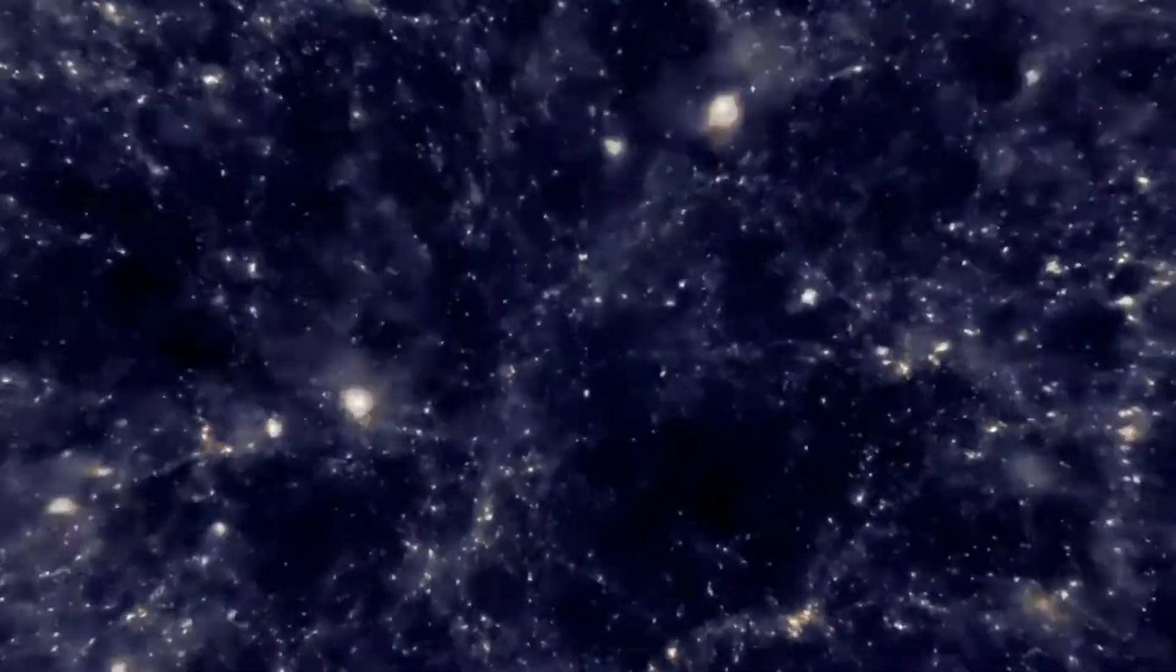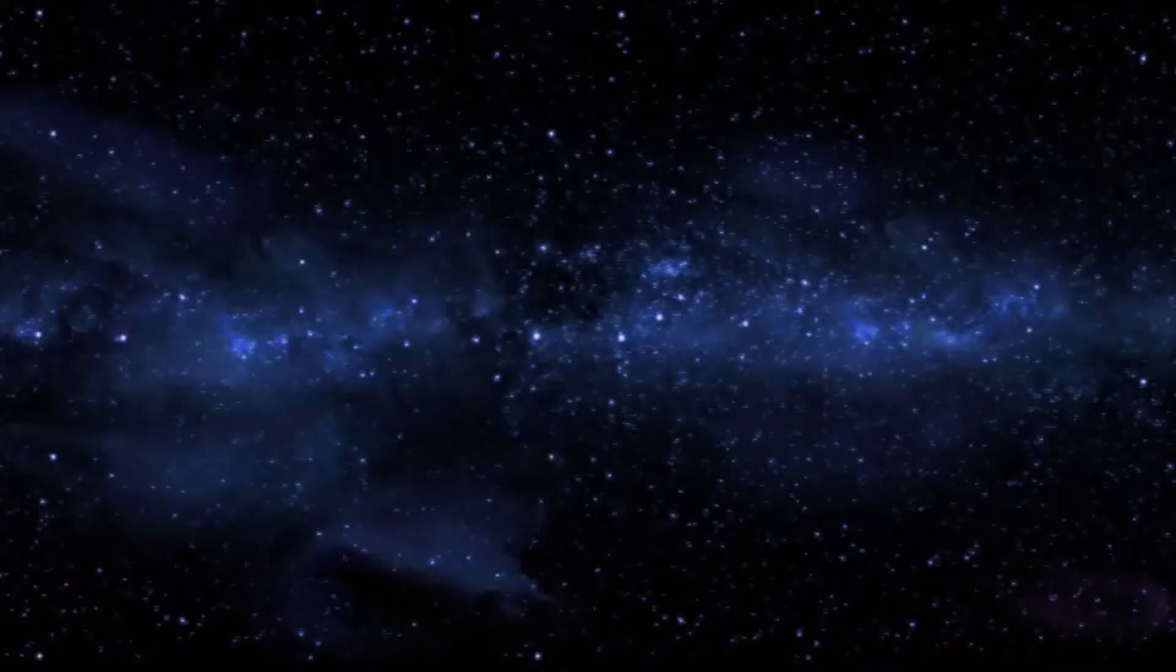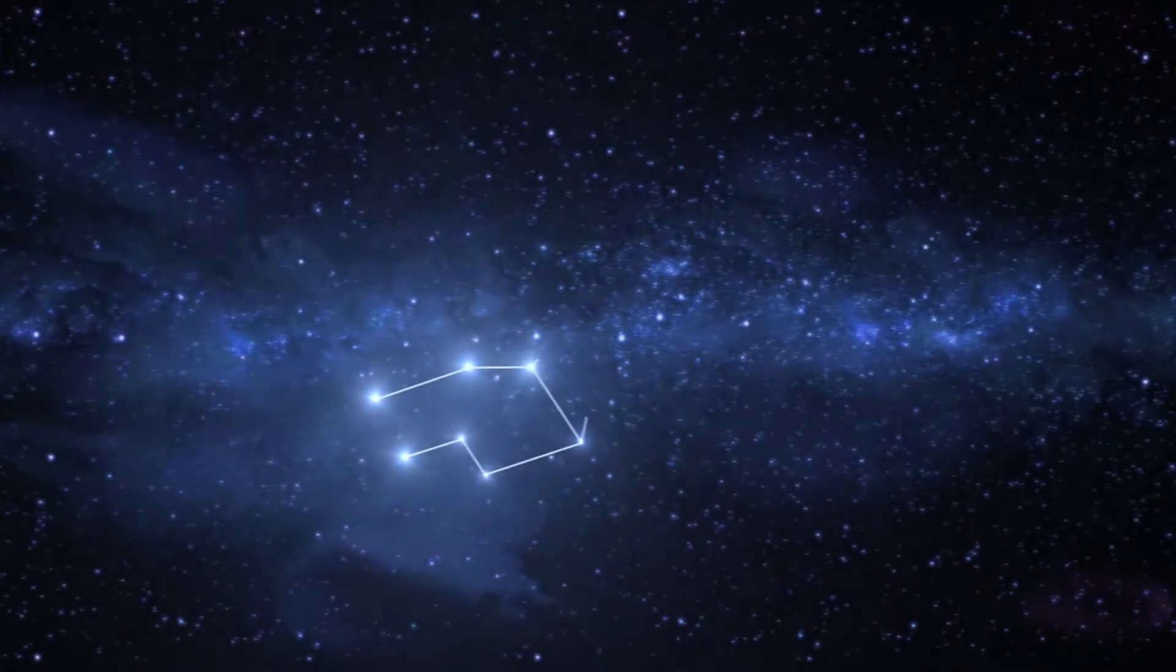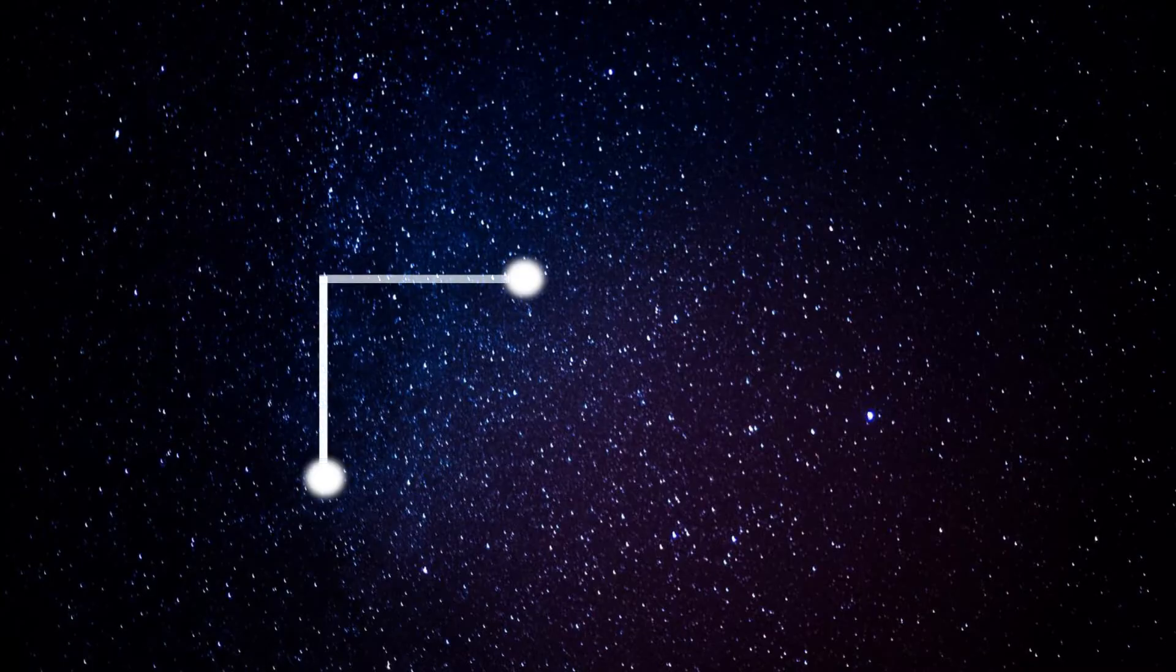Over a thousand galaxies are known members of the Virgo cluster. They lie in the direction of the constellations Virgo and Coma Berenices.